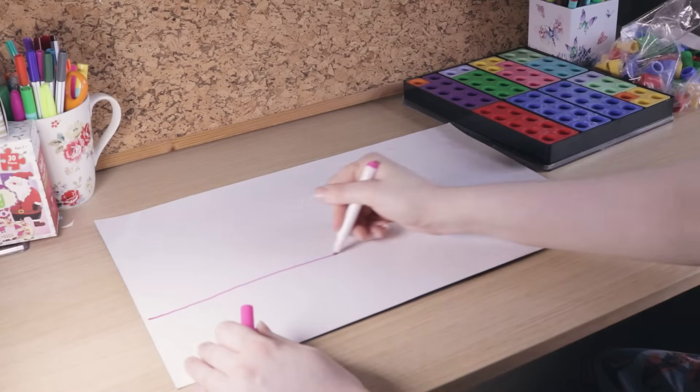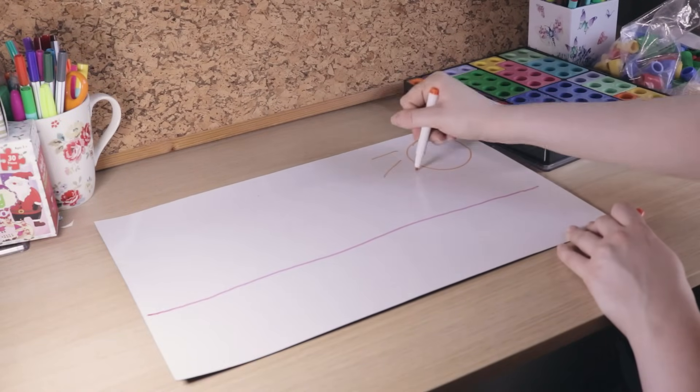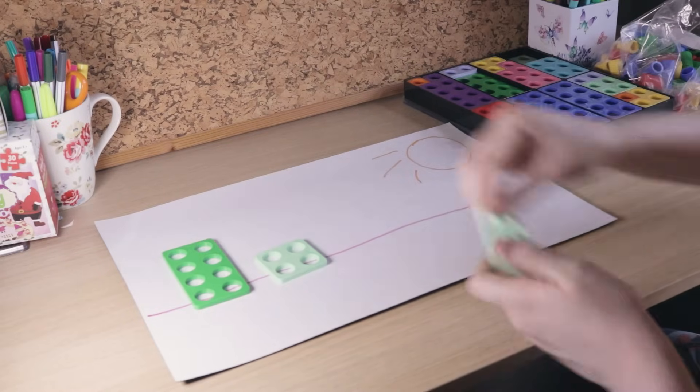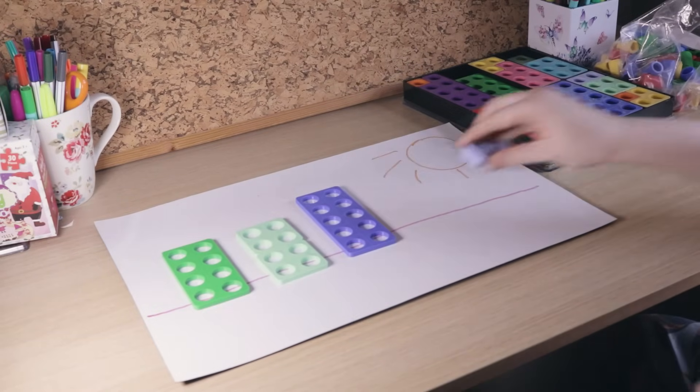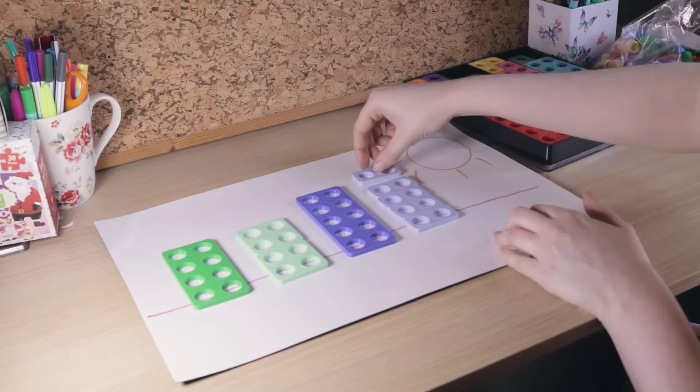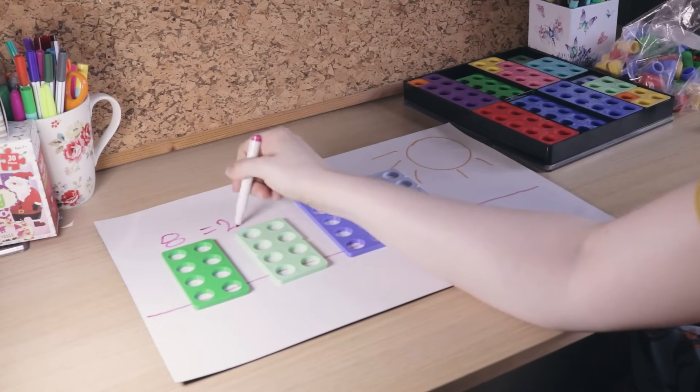You could ask children to build shapes out of the same type of Numicon shape. I like to picture the shapes as city buildings, with the peg holes as windows. How many four shapes does it take to make this eight shape building? You can also ask them to see what other kinds of shapes make up the buildings, challenging them to only use one type of shape.